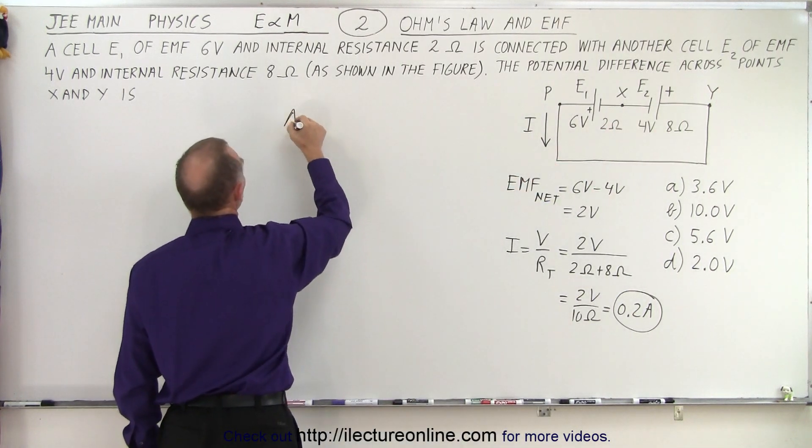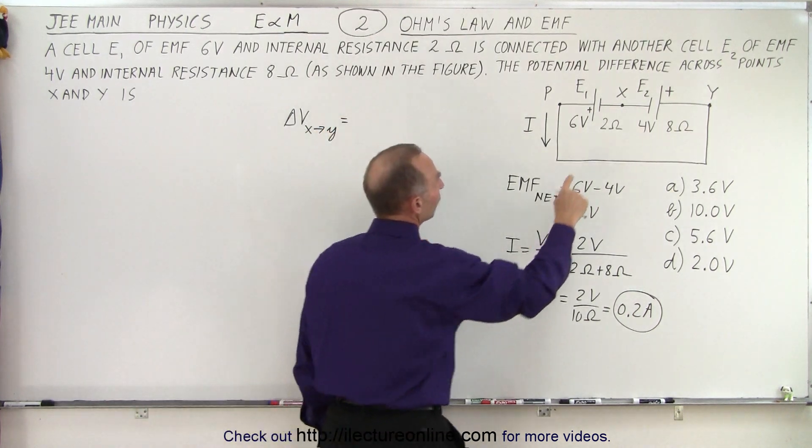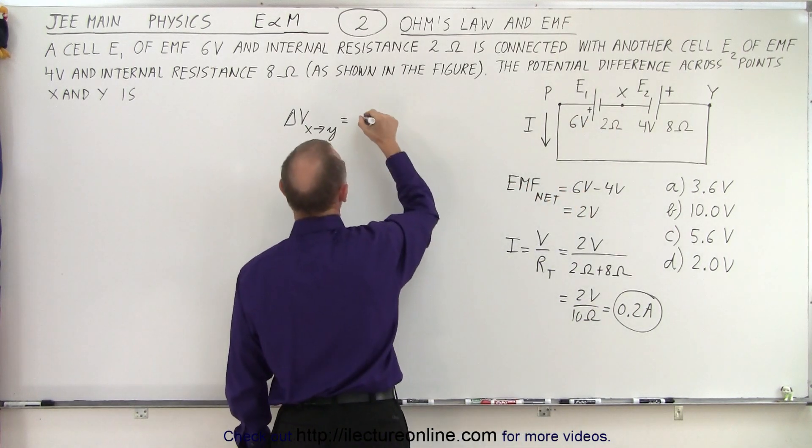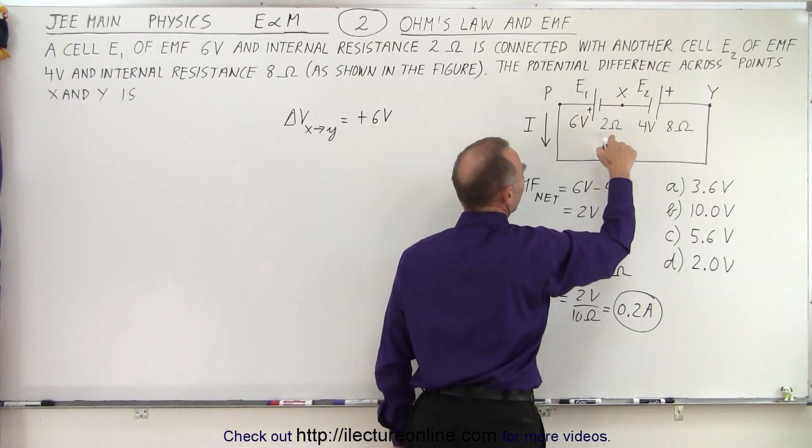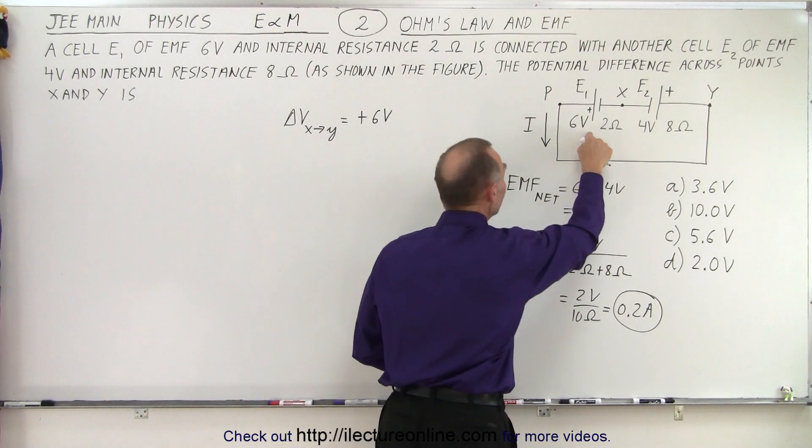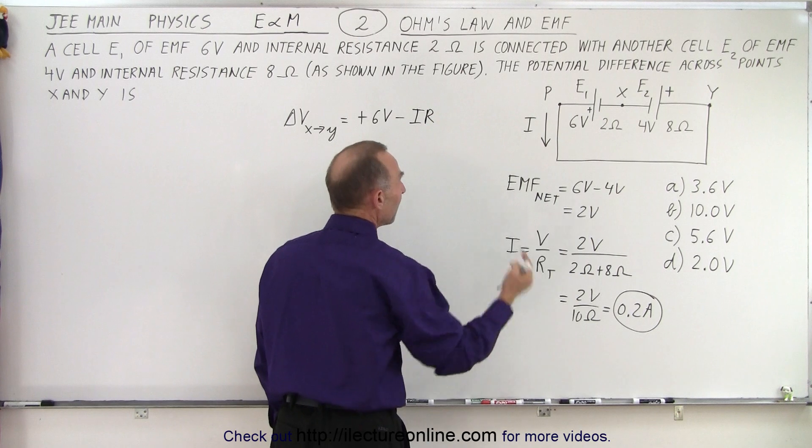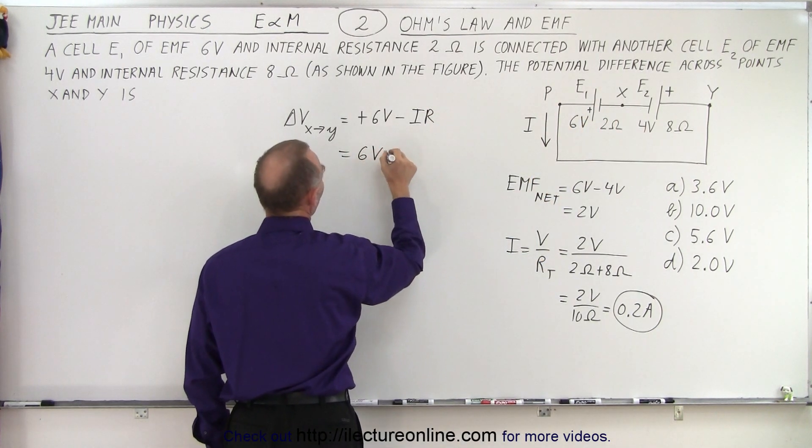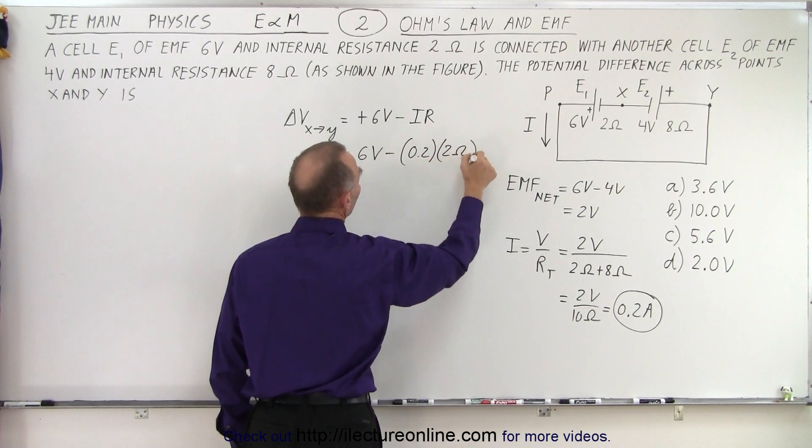So the change in the voltage going from X to Y is equal to, while going from here across this battery across E1 is a jump of 6 volts so we go plus 6 volts, and then since this has internal resistance of 2 ohms we have a voltage drop due to the internal resistance. That would be minus I the current times the resistance R, minus because we're going with the flow of the current.